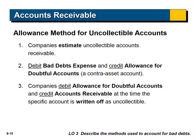We have a couple of ways for dealing with uncollectable accounts. One is called the allowance method, where companies estimate uncollectable accounts receivable. The journal entry is to debit bad debt expense — an expense account — and credit allowance for doubtful accounts, which is a contra asset. Contra just means it has the opposite balance of normal: since normal for an asset is a debit balance, the contra has a normal credit balance. When you write off an account as uncollectable, meaning a customer doesn't pay, you debit allowance for doubtful accounts and credit accounts receivable.